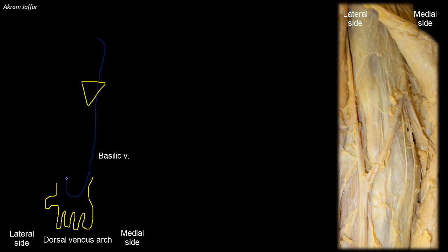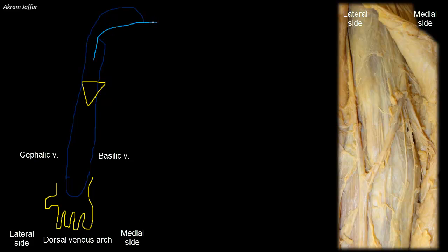From the lateral side of the dorsal venous arch, the vein that arises is called the cephalic vein. It passes on the lateral side of the forearm and the lateral side of the cubital fossa, but this vein continues to the root of the limb, where it passes into the deltopectoral groove and opens into the axillary vein. The venae comitantes of the brachial artery join the basilic vein to form the axillary vein, and then the axillary vein receives the cephalic vein.